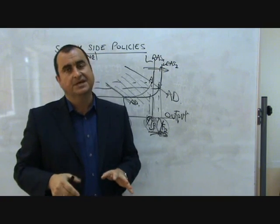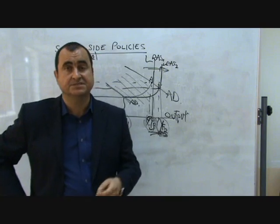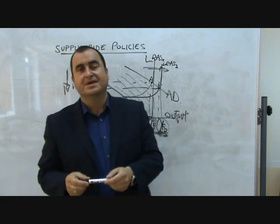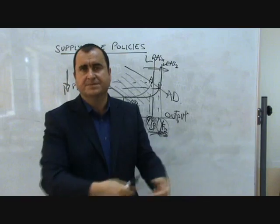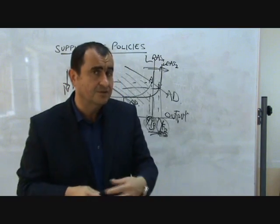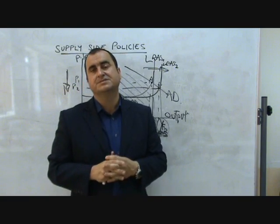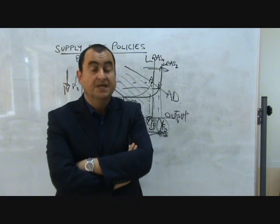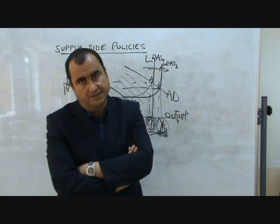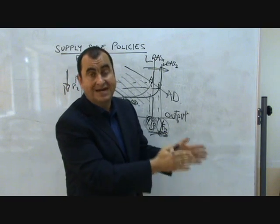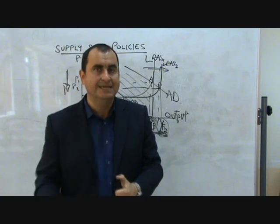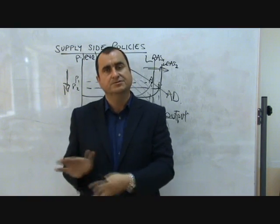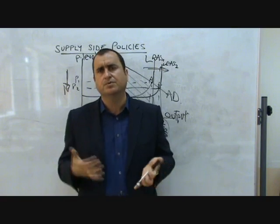Any action at all by government that helps improve the efficiency of businesses qualifies as a supply-side policy. Other examples include reducing government bureaucracy so businesses can operate more quickly, relaxing health and safety laws, and relaxing environmental regulations. Even cutting tax rates — although it sounds like fiscal policy — is also a supply-side policy because it boosts motivation, encourages people outside the workforce to enter it since they keep more of their pay, and encourages businesses to invest knowing they can keep more of their profit.